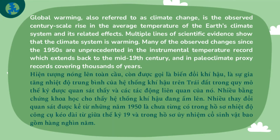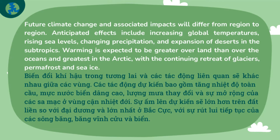Global warming, also referred to as climate change, is the observed century-scale rise in the average temperature of the Earth's climate system and its related effects. Multiple lines of scientific evidence show that the climate system is warming. Many of the observed changes since the 1950s are unprecedented in the instrumental temperature record, which extends back to the mid-19th century, and in paleoclimate proxy records covering thousands of years. Future climate change and associated impacts will differ from region to region.